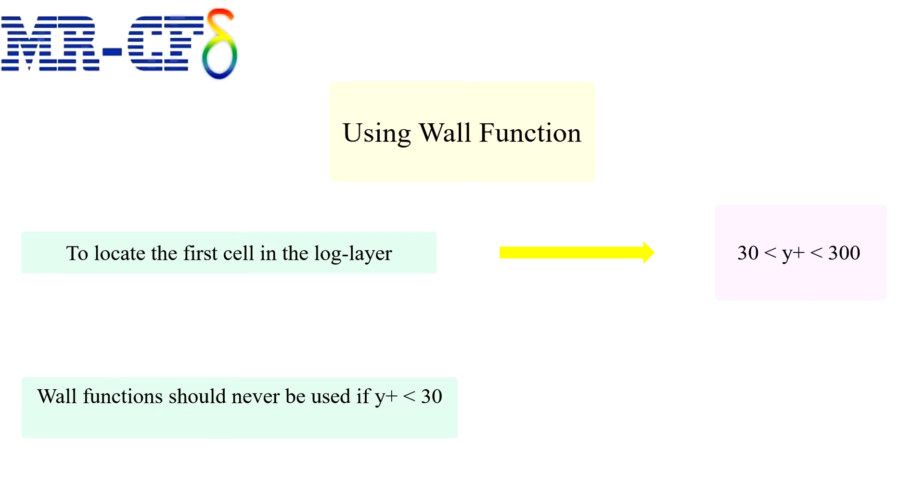For very high Reynolds, Y plus can be higher if still in log layer and for very low but still turbulent Reynolds, the log layer may not extend far enough away from the wall for the use of wall functions to be valid.